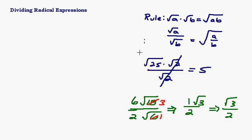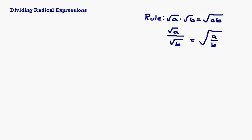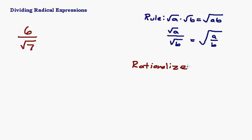Now we run into a situation called rationalizing the denominator. You might see a problem like 6 over square root 7. That pretty much seems done — there's nothing to reduce. The directions might say to divide it, or to rationalize the denominator. A lot of instructors are getting away from rationalizing the denominator because you could just use a calculator, but let's cover it. Rationalizing the denominator means you want to get a rational number in your denominator.